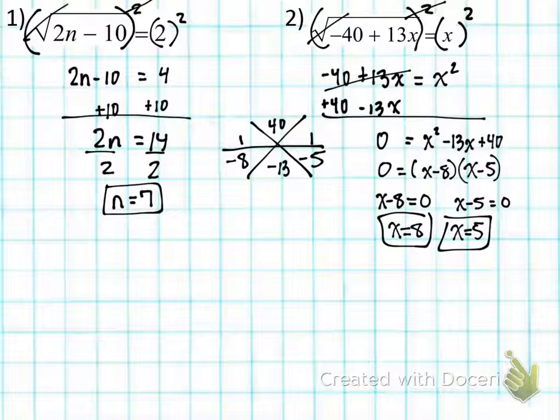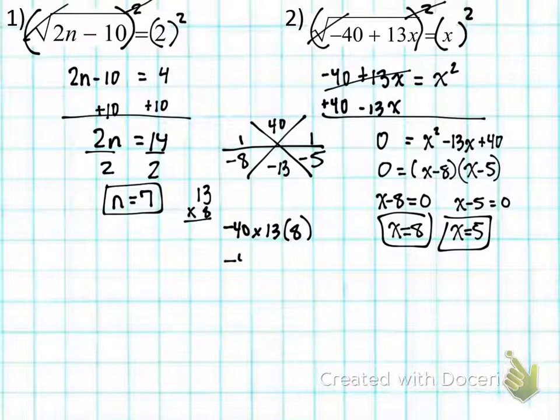So these are your two answers. Now we're just going to double check that they're not extraneous, so focusing on just this particular radical sign, we're just going to plug in 8 into x first, so we have negative 40 times 13 times 8. 13 times 8 is 104. So we have negative 40 plus 104, which is going to be 64. That's good. That one's not negative. If I do 5, I know 5 times 13 is 65 minus 40 is 25, so we're good. These are both non-extraneous, so we're all good on these two examples.